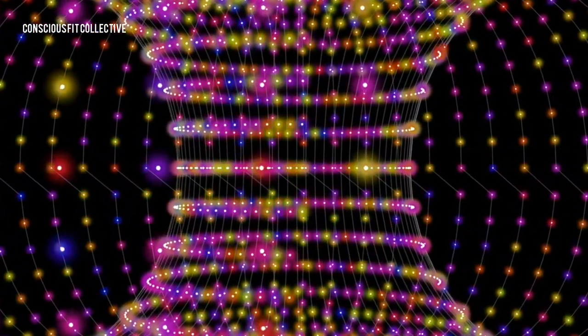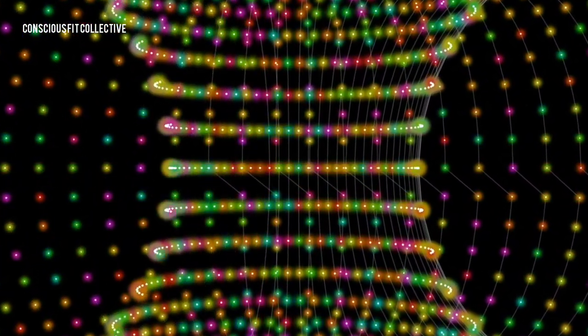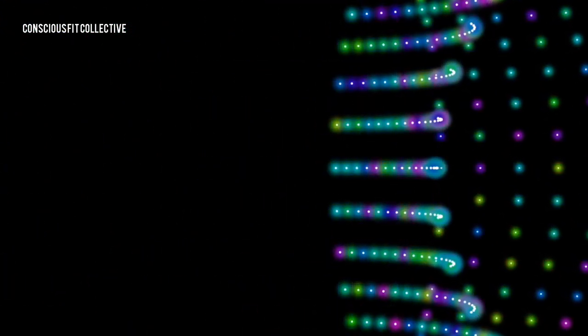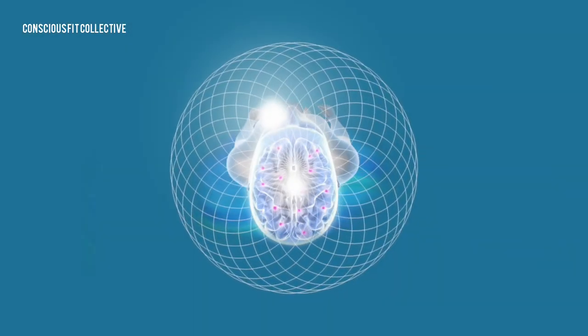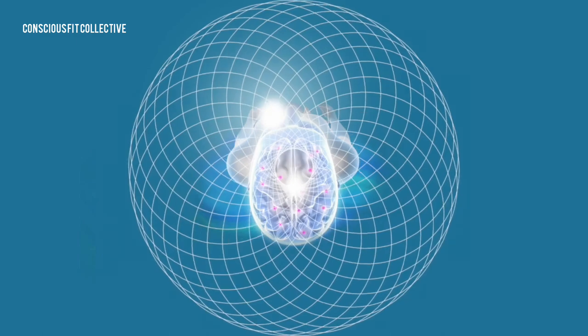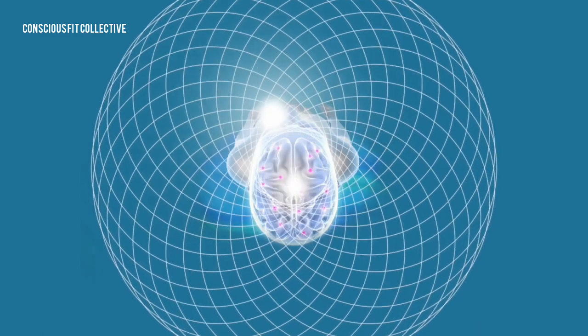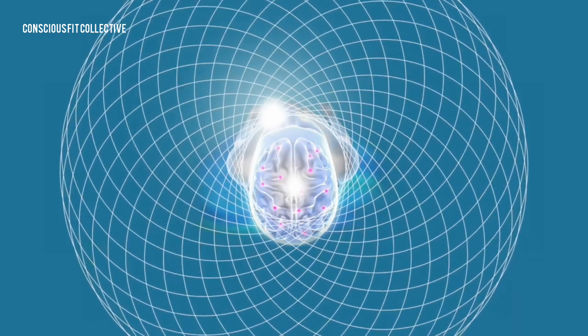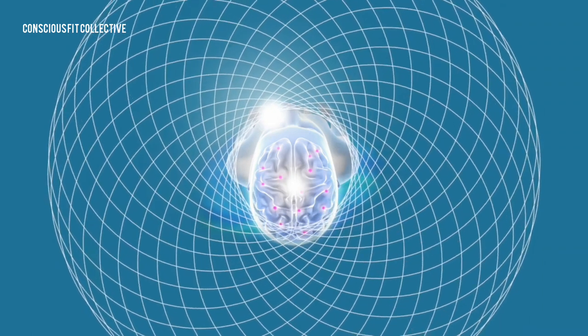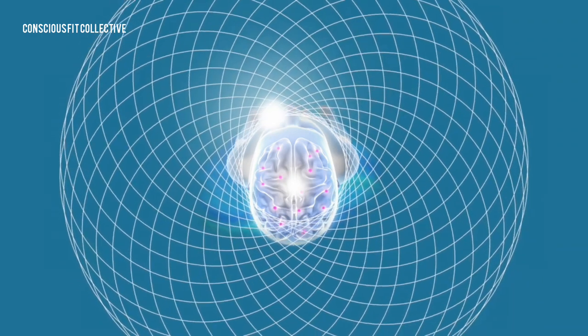The heart is the most powerful source of electromagnetic energy in the human body, producing the largest rhythmic electromagnetic field of any of the body's organs. The heart's electrical field is about 60 times greater in amplitude than the electrical activity generated by the brain.